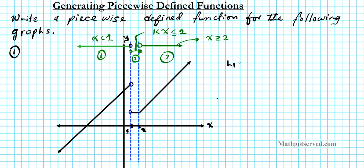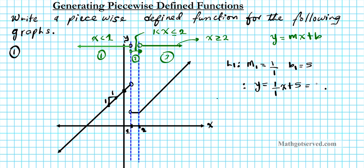For line one, L1, we need the slope and the y-intercept. The slope — rise over run — pick two points: we rise one and run one, so one over one is the slope. The y-intercept is where the graph cuts the y-axis: counting up gives five, so the y-intercept b is five. Plugging into slope-intercept form y equals mx plus b, line one is defined by y equals one over one times x plus five, which simplifies to y equals x plus five.